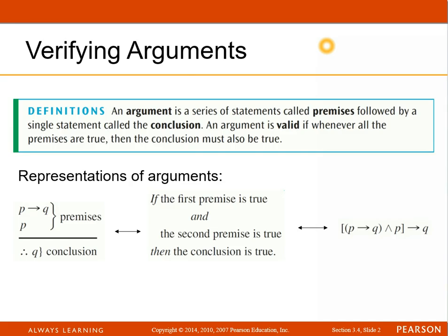To verify an argument, you first are going to start with some statements, and they call those the premises, and then it'll be followed by a single statement called the conclusion. In some of these, you'll have two premises, and on others, you'll have three. I don't think we do any more than three, just two and three. An argument is valid if, whenever all of the premises are true, then the conclusion must also be true.